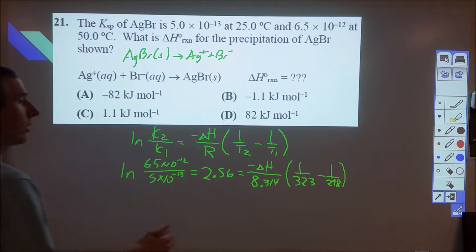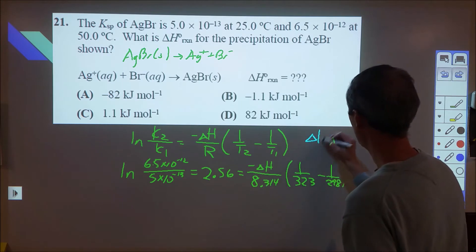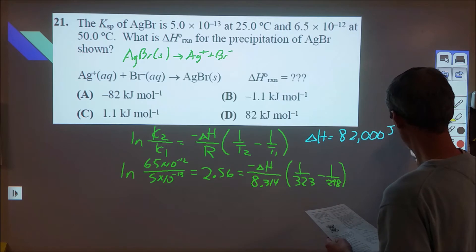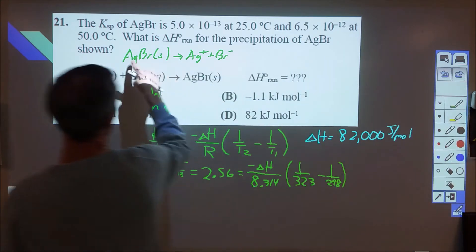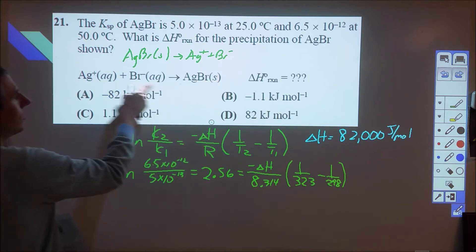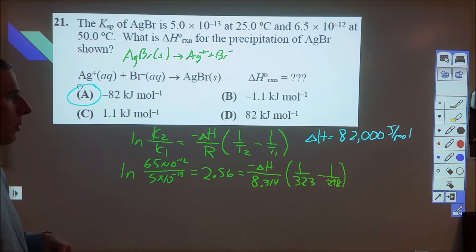So when you go through and do all the manipulations on that, we end up finding that delta H is 82,000 joules per mole. But that is for this delta H, so the reverse reaction would then be the flip side of that, and that's where we come up with A, which is negative 82,000 joules per mole.